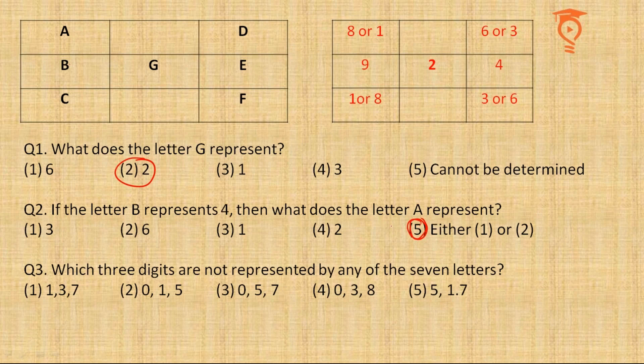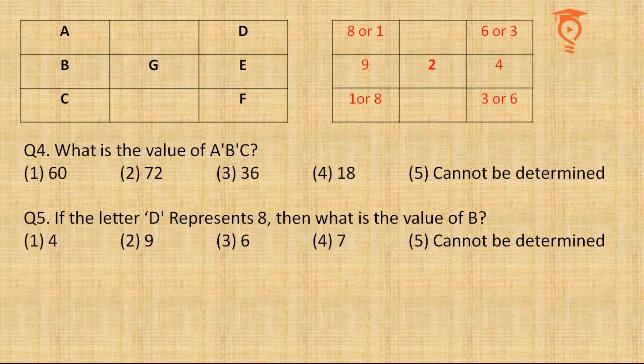So I think it is going to be option 5, either first option or second option, because even till the end we could not figure out between A and C which is going to be bigger or smaller. Third question: which three digits are not represented? 0 is one of them, 5 is one of them, 7 is one of them. Third option becomes the answer for this question.